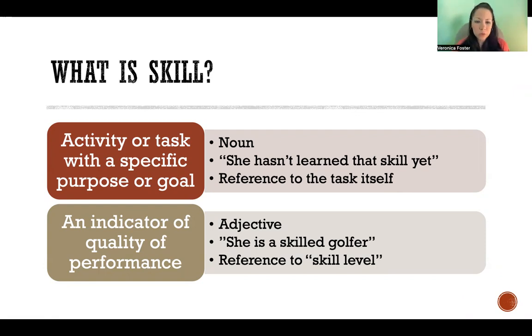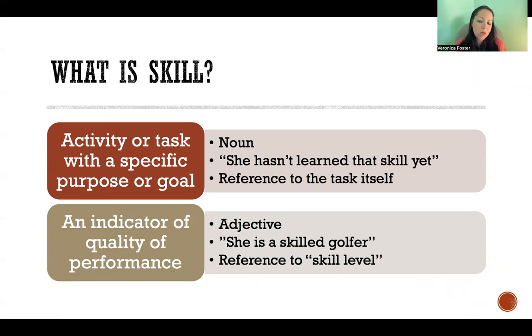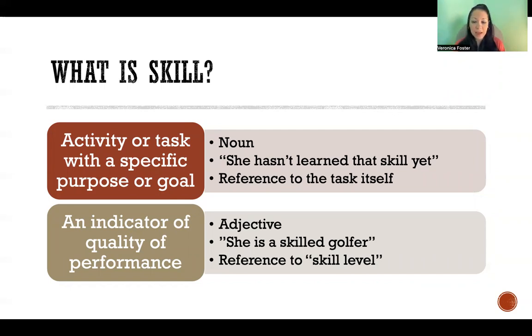We also use the word skill as an adjective, as an indicator of the quality of performance. For example, we could say 'She is a skilled golfer,' where skilled is an adjective describing the skill level of the golfer.